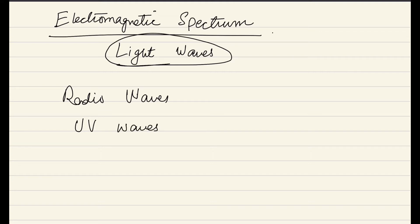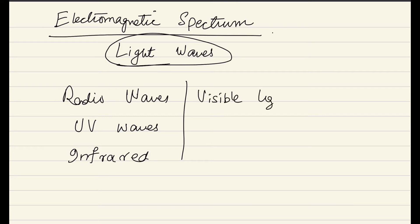We have infrared waves, then comes our visible light waves, after that we have X-rays and gamma rays.